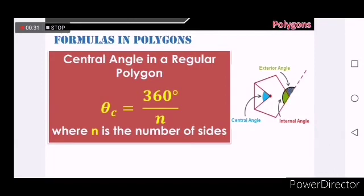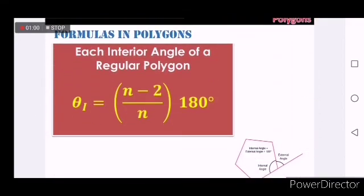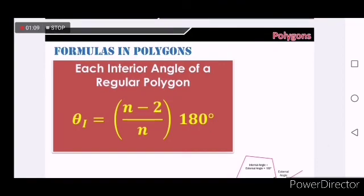If you are finding the central angle in a regular polygon, the formula is theta sub c equals 360 degrees over n. It's the measure of each central angle. And since it's a regular polygon, finding one of the central angles is enough. To find the measure of each interior angle, the formula is theta sub i equals n minus 2 over n times 180 degrees.